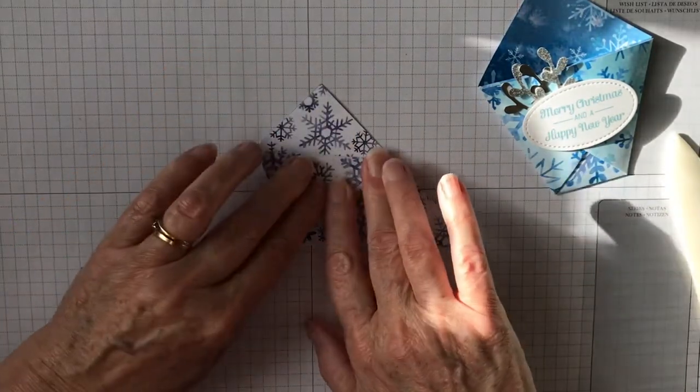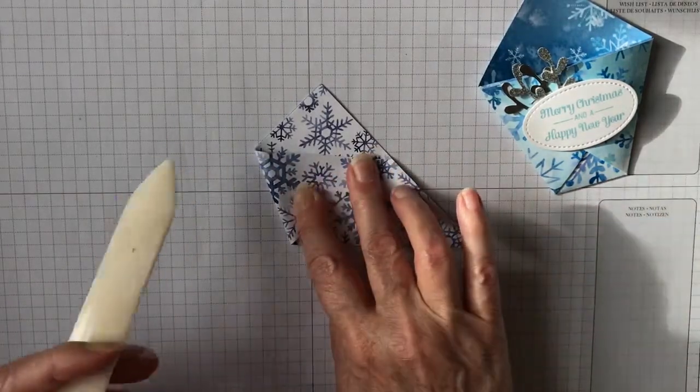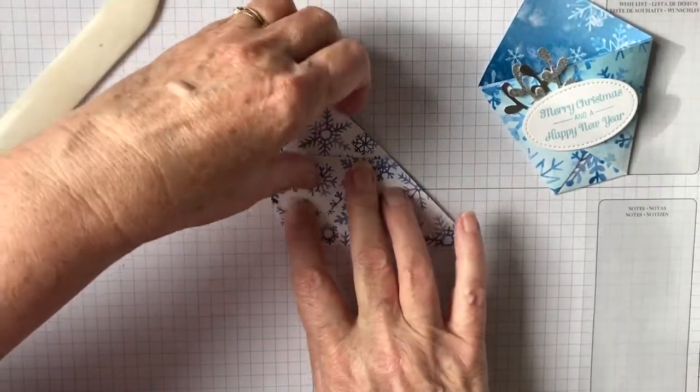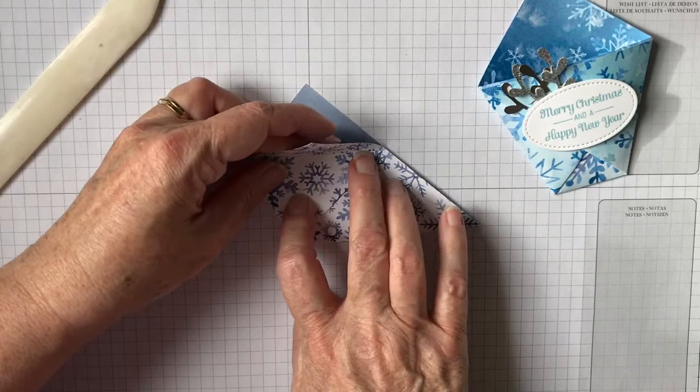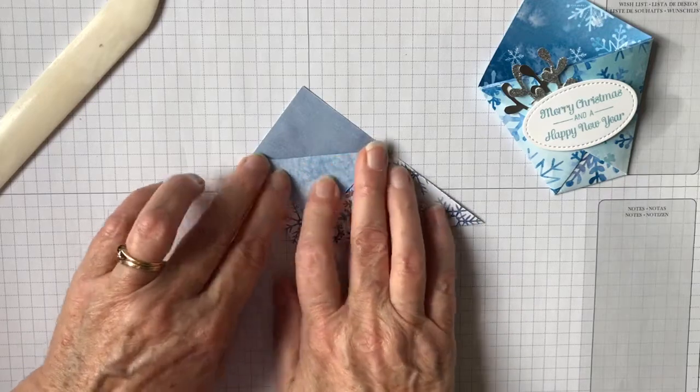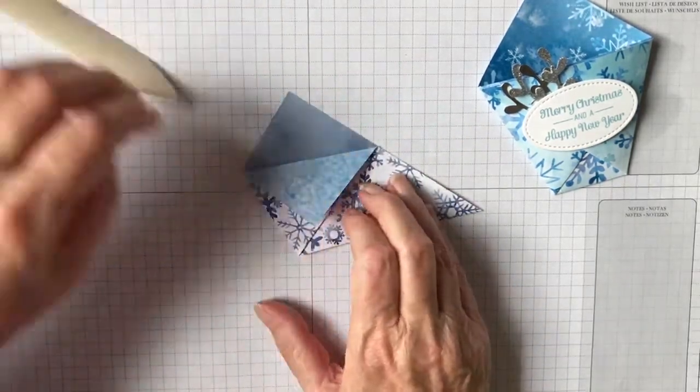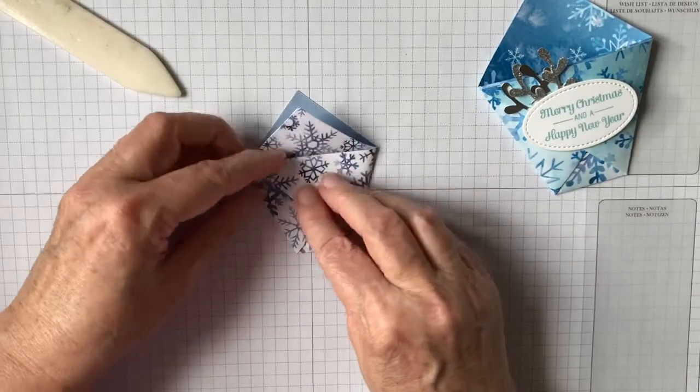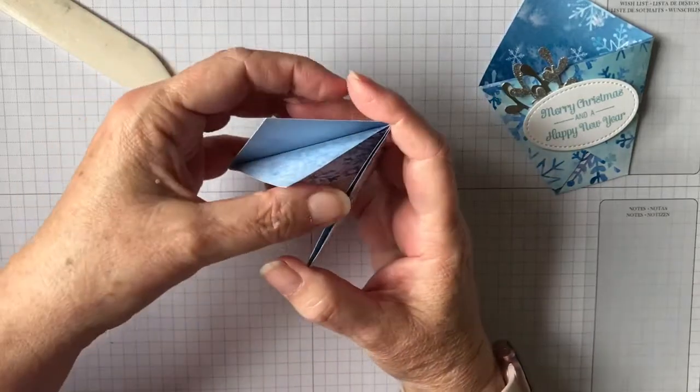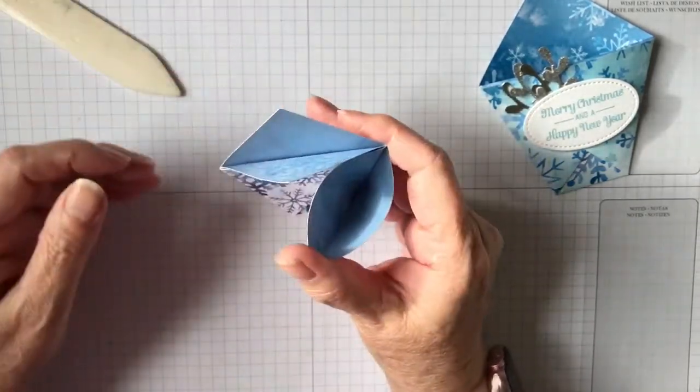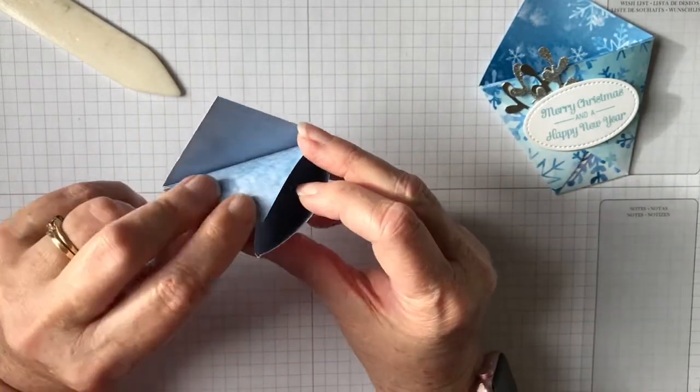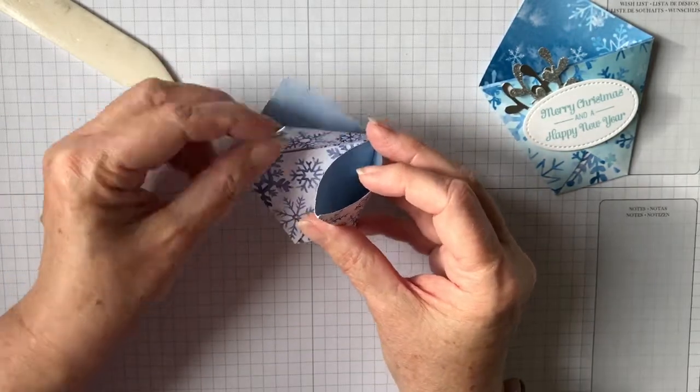Now at this point, what I like to do is fold this piece down to get your line of where it's going to fold. If you bring your original corner back in and open it out a bit so that you've got a pocket there, what you want to do is feed that flap that you've just folded down.